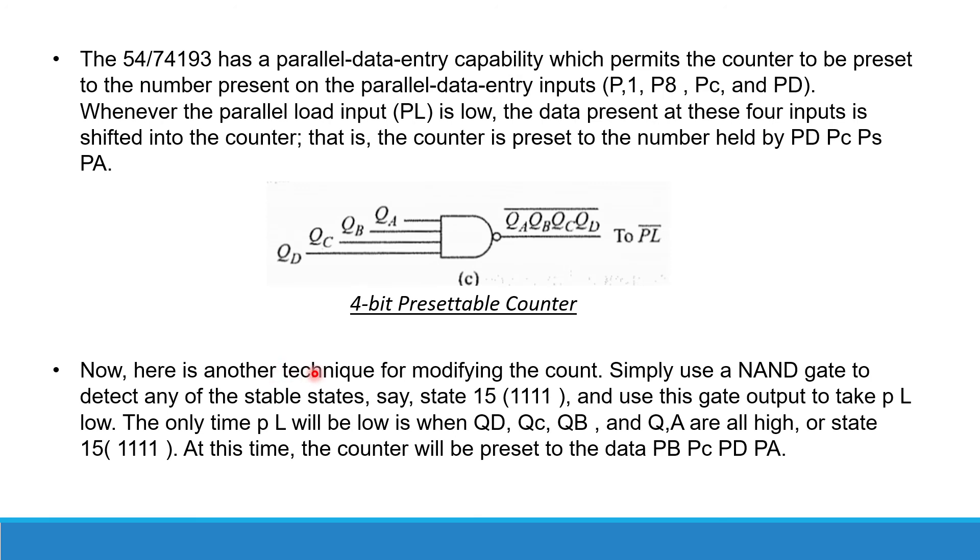Now, here we have another technique for modifying the count. Simply, we use a NAND gate to detect any of these stable states, say state 15, and use this gate output to take PL low.